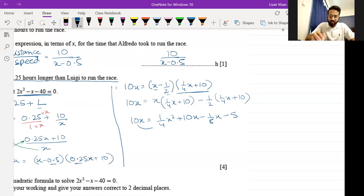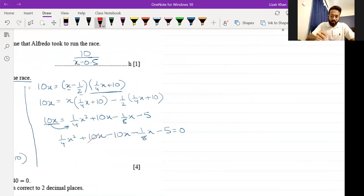I'm going to shift this 10x to the right side, which will result in 1 upon 4x squared plus 10x minus 10x minus 1 upon 8x minus 5 equals 0. The plus 10x minus 10x will cancel out and become 0. The equation that results is 1 upon 4x squared minus 1 upon 8x minus 5 equals 0.